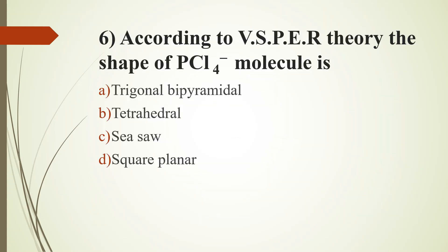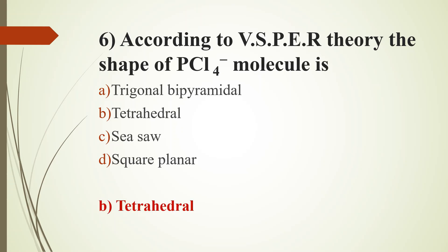Sixth question. According to VSEPR theory, the shape of phosphorus tetrachloride minus (PCl4⁻) molecule is: Option A, Trigonal bipyramidal; Option B, Tetrahedral; Option C, See-saw; Option D, Square planar. Answer is Option B, Tetrahedral. VSEPR stands for valence shell electron pair repulsion theory, which predicts the 3D molecular geometry. This molecule has a tetrahedral shape.